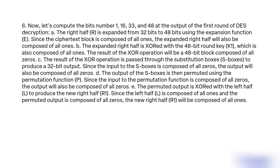Now, let's compute the bits number 1, 16, 33, and 48 of the output of the first round of DES decryption. A: The right half R is expanded from 32 bits to 48 bits using the expansion function E. Since the ciphertext block is composed of all ones, the expanded right half will also be composed of all ones. B: The expanded right half is XORed with the 48-bit round key K1, which is also composed of all ones. The result of the XOR operation will be a 48-bit block composed of all zeros.